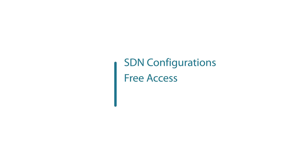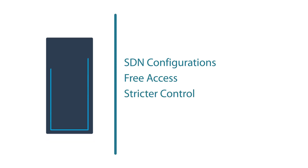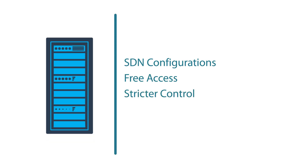Depending on your OpenShift SDN configuration, there are different ways you can tailor the network topology. You can have, for example, a free for all pod connectivity, which would be similar to a flat network. Or you can have something stricter with different levels of security boundaries and restrictions.